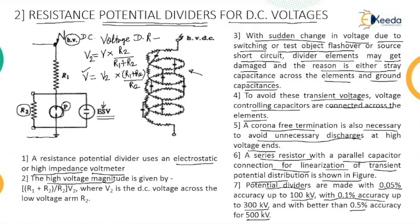So this is how we can measure high DC voltage with the help of a resistance potential divider. Instead of using a micro-ammeter for current measurement, direct voltage measurement can be done. The voltage division rule is used for calculation. In the next lecture, we will cover DC high voltage measurement with the help of a generating voltmeter.